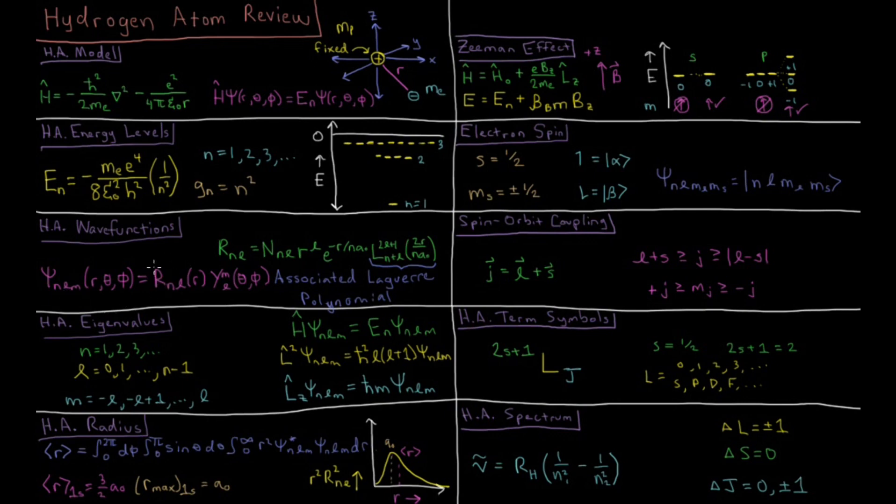The new part is this radial function depending on quantum numbers n and l. That's some normalization constant times r to the l times a decaying exponential e to the minus r over n a naught, where a naught is the Bohr radius, 0.529 Angstroms, and then there's the associated Laguerre polynomial.